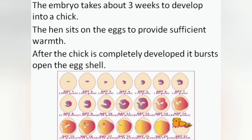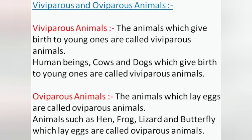The animals which give birth to young ones are called viviparous animals. The animals which lay eggs are called oviparous animals. Animals such as hen, frog, lizard and butterfly, which lay eggs, are called oviparous animals.